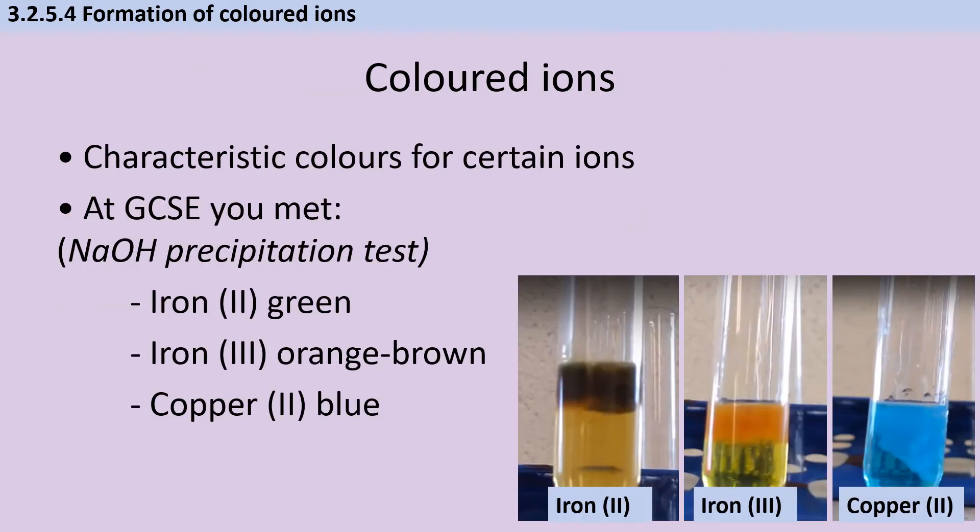Transition metal compounds have characteristic colors. At GCSE you met the sodium hydroxide precipitation test which gives a dark green iron(II) hydroxide precipitate, a rusty orange-brown iron(III) hydroxide precipitate, and a blue copper(II) hydroxide precipitate.